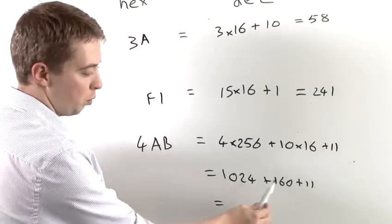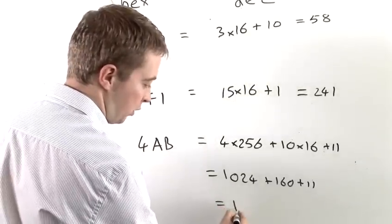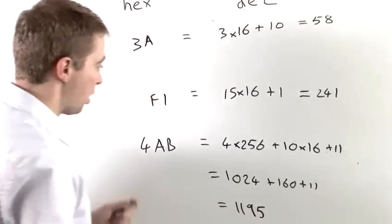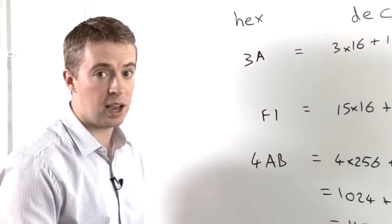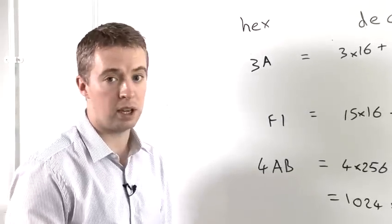And when we add all of those together, we get 1024 plus 160 is 1184 plus 11, which leaves us 1195. Therefore, 4AB in hexadecimal represents 1195 in decimal.